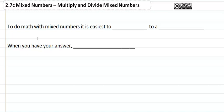To do math with mixed numbers, well with multiplying and dividing, you have to convert to a fraction, otherwise it's just way too hard. When you have your answer, convert back to a mixed number.